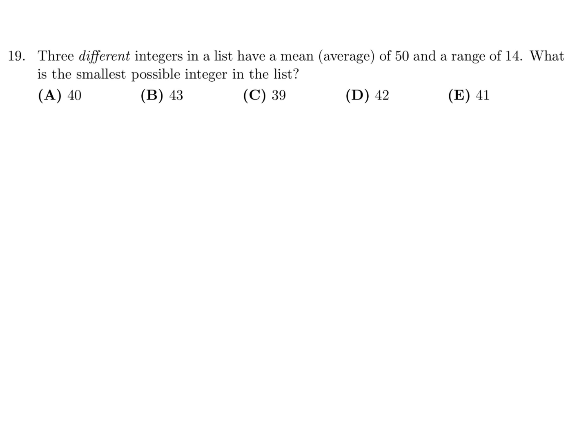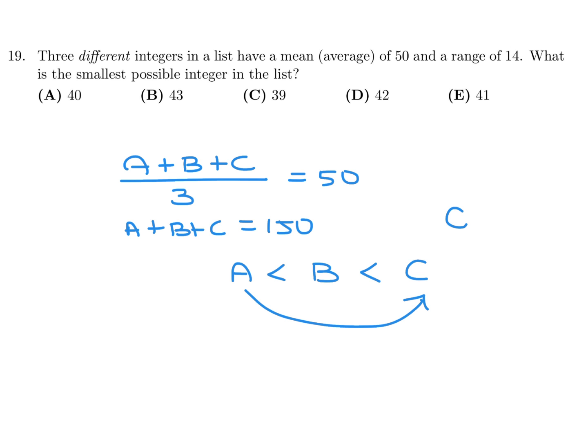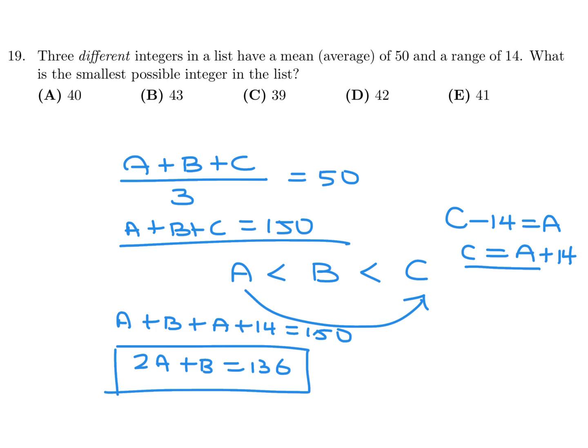Three different integers in the list have a mean of 50 and a range of 14. What is the smallest possible integer in the list? So whatever those are, I'll call them ABC. Their mean is 50. So that means that their sum would be 150. Okay. And the range is 14. So that means that if you list them from whatever, smallest to biggest, the range from A to C is 14. So that basically means that C minus 14 is equal to A, I believe. Yeah. Or C is equal to A plus 14, however you want to write it. So that means that if I substitute this into here, I would get A plus B plus A plus 14, and that's equal to 150, or 2A plus B is equal to 136. Okay. That is pretty much as much, as far as I can go.